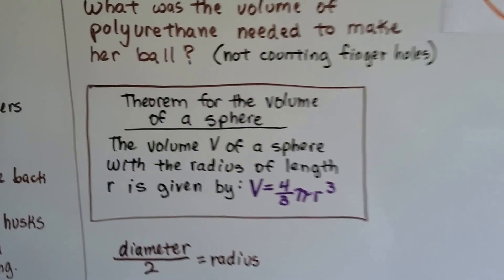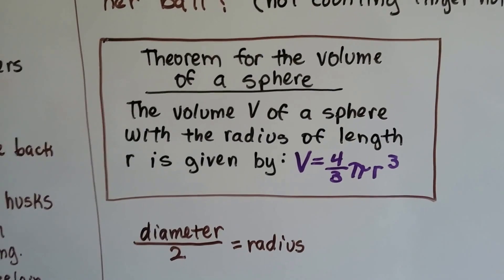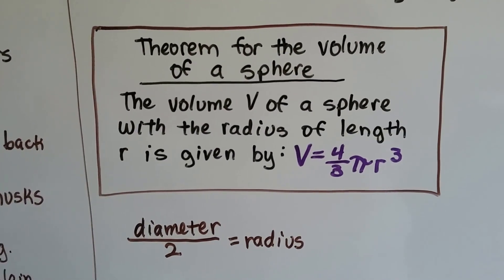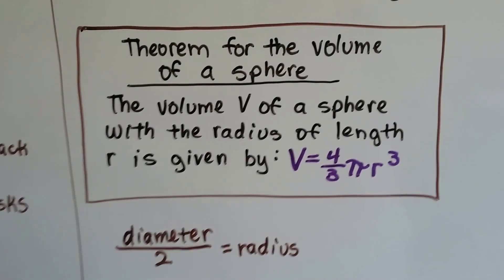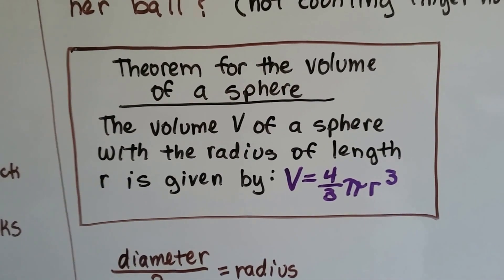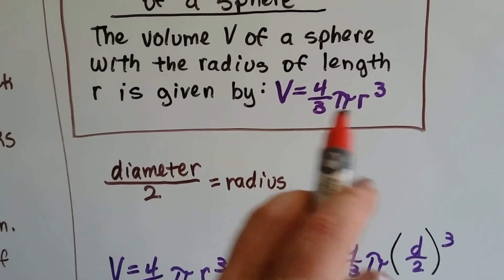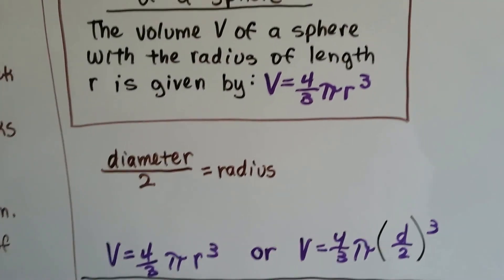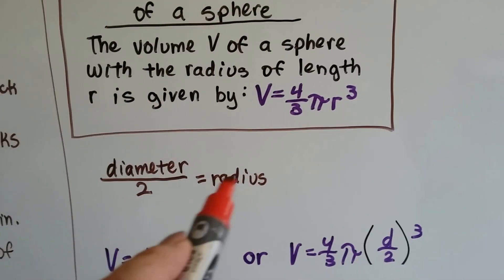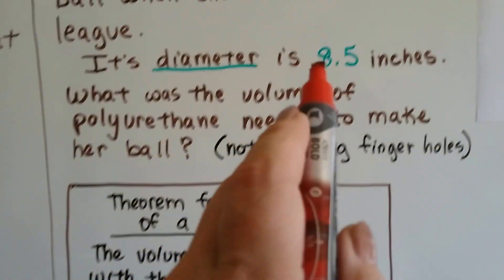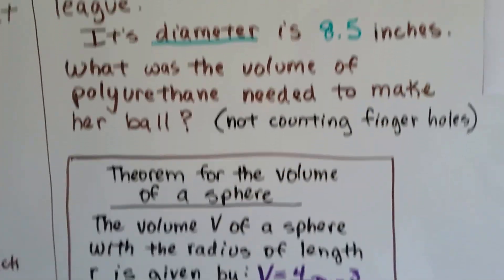The theorem for the volume of a sphere: the volume V of a sphere with the radius of length r is given by V equals 4/3 times π times radius cubed. That's the formula for the volume of a sphere. Remember, the diameter divided by 2 is the radius.